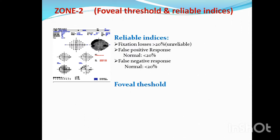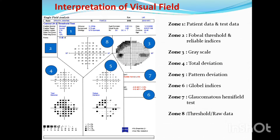This is the foveal threshold. We have reliable indices. We also have to note false positives and false negatives, and fixation losses. The patient who has a central fixation — fixation loss greater than 20% is unreliable. False positive and false negative greater than 20% is also unreliable. False positive means a trigger-happy patient who presses the button even without seeing the stimulus. If unreliable, you can repeat the test.